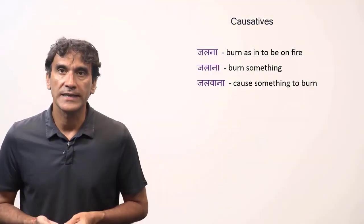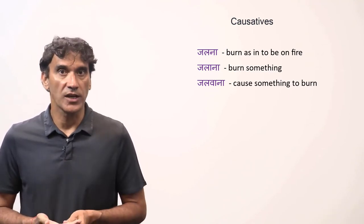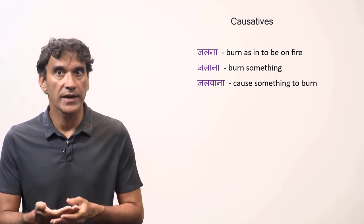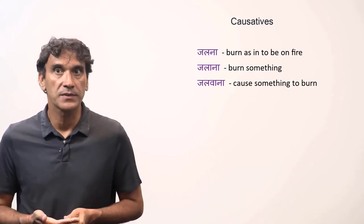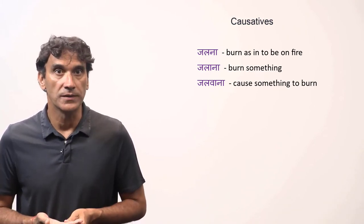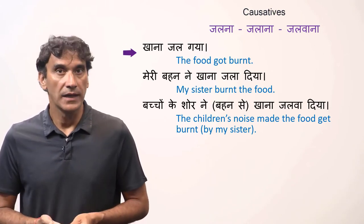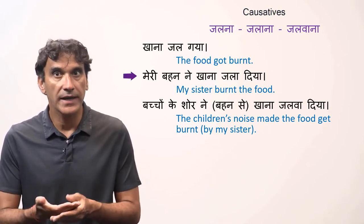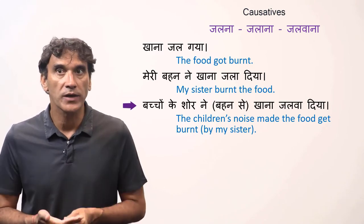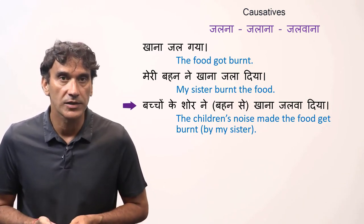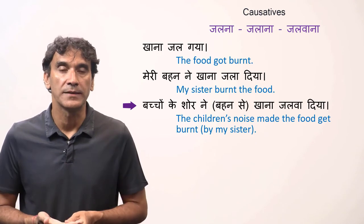Let's now take some sentences with causatives. The first set is jalna, jalana, and jalwana — to burn, to burn something, to cause something to burn. Khana jal gaya: the food got burnt. Meri behen ne khana jala dia: my sister burnt the food. Bachon ke shor ne khana jalwa dia: the children's noise made the food get burnt.